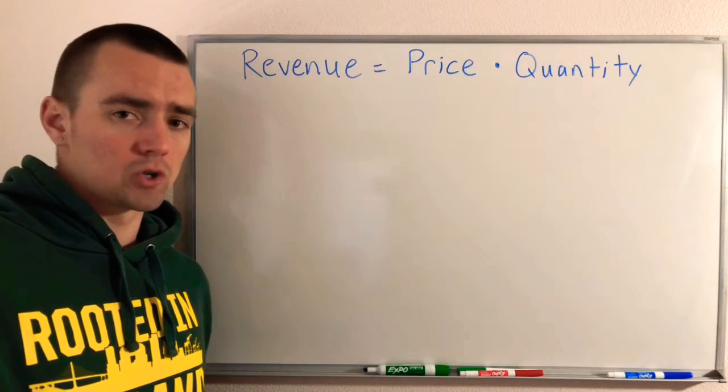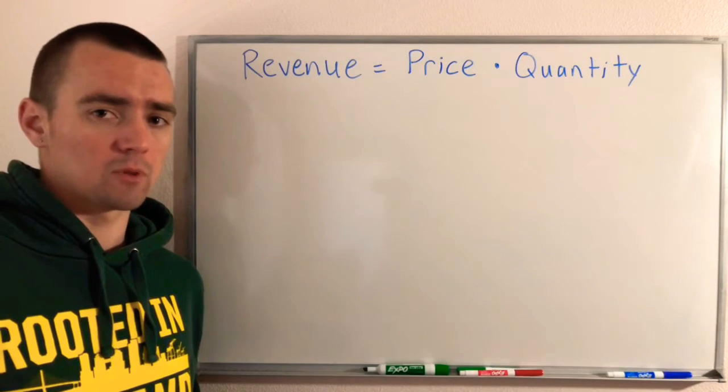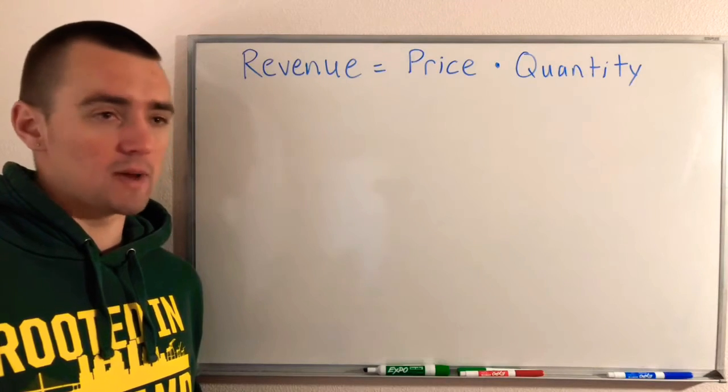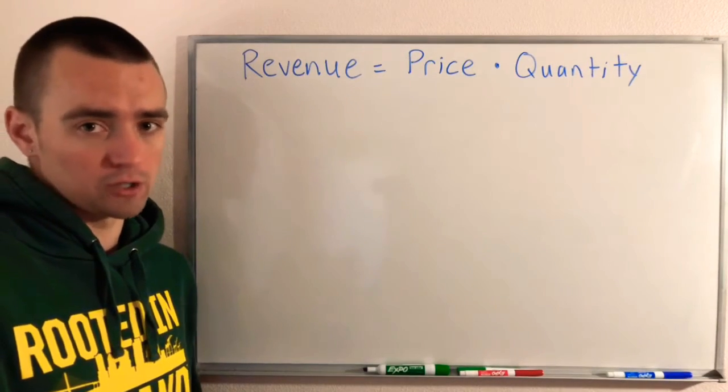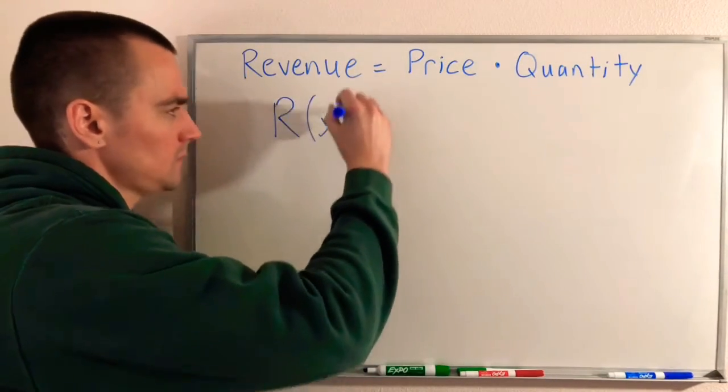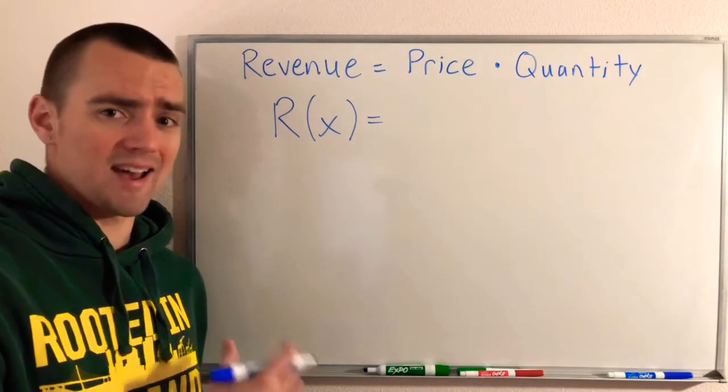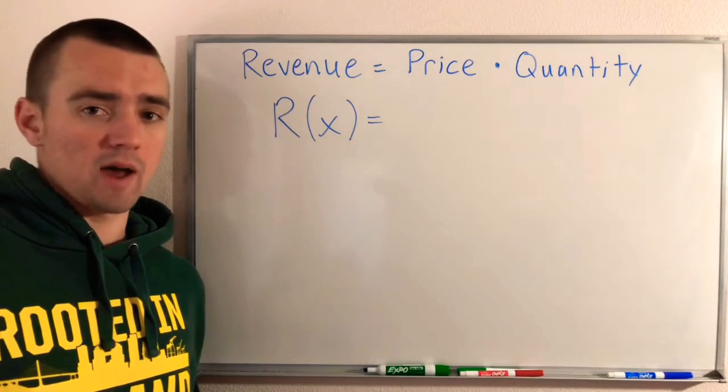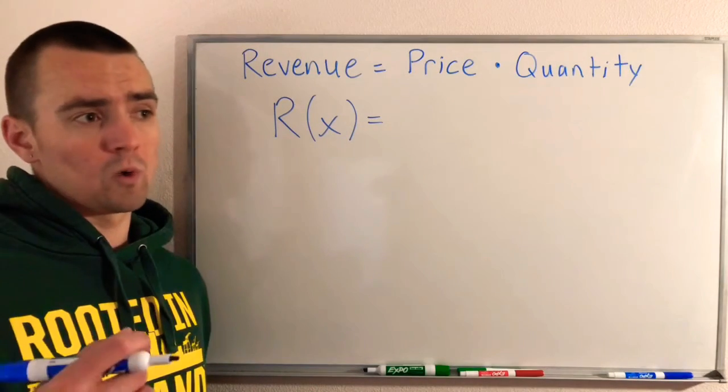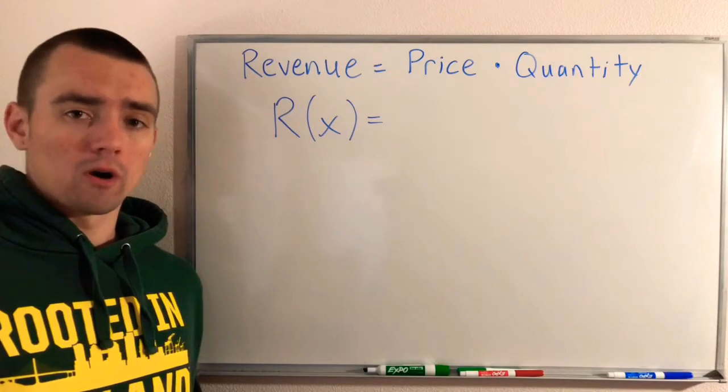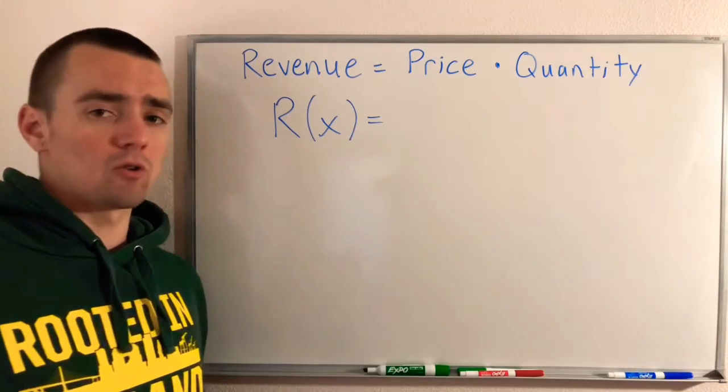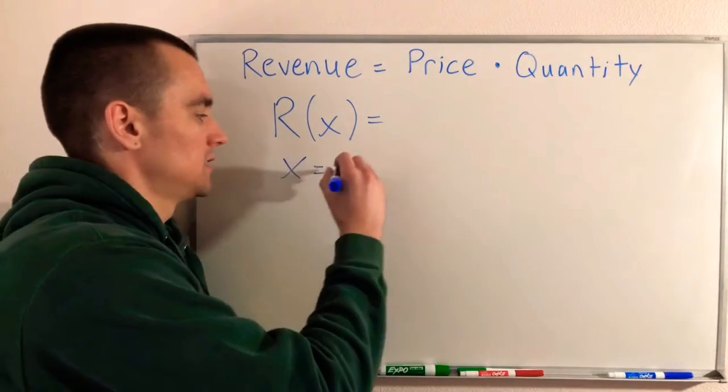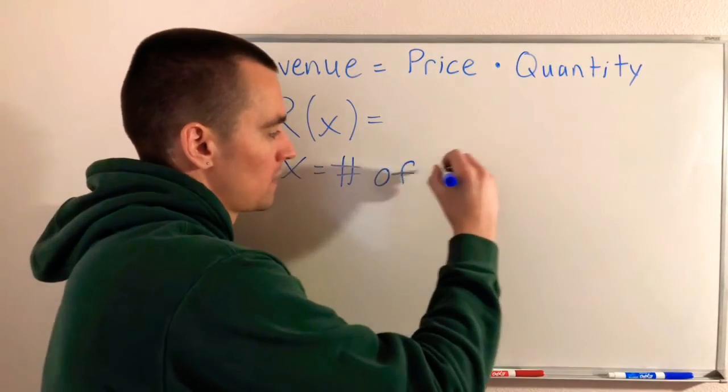Since we're trying to maximize revenue, we should come up with an equation for the revenue. We're going to come up with an equation, a function of X. Let's think for a second what X actually represents. We're really only given information about how the occupancy numbers will be impacted by $10 increases in rent, so it would probably be more helpful to have X represent the number of $10 increases we're going to apply to the rent.